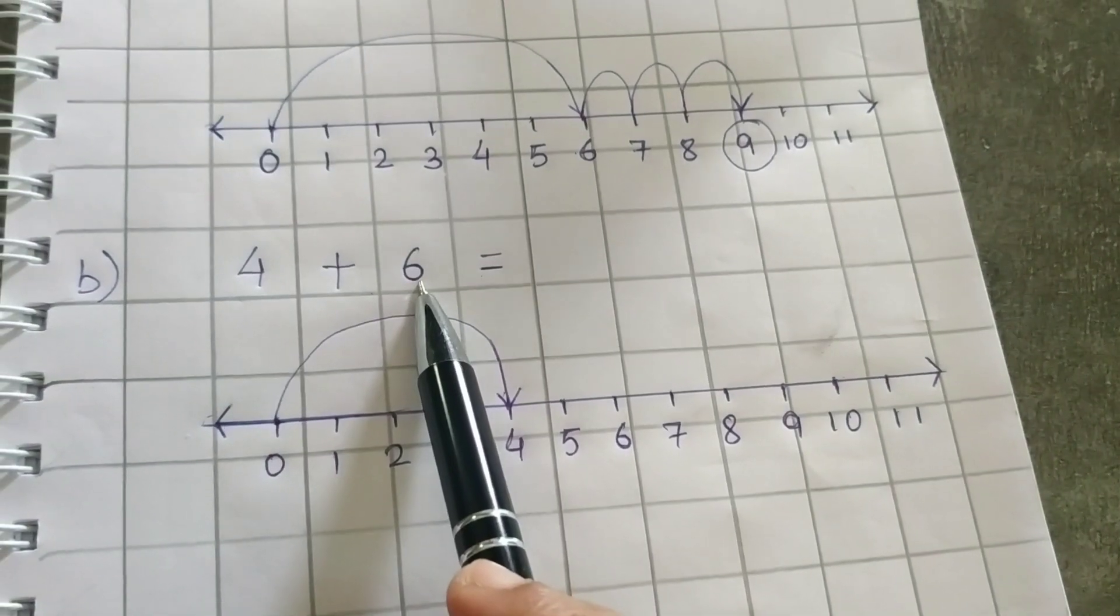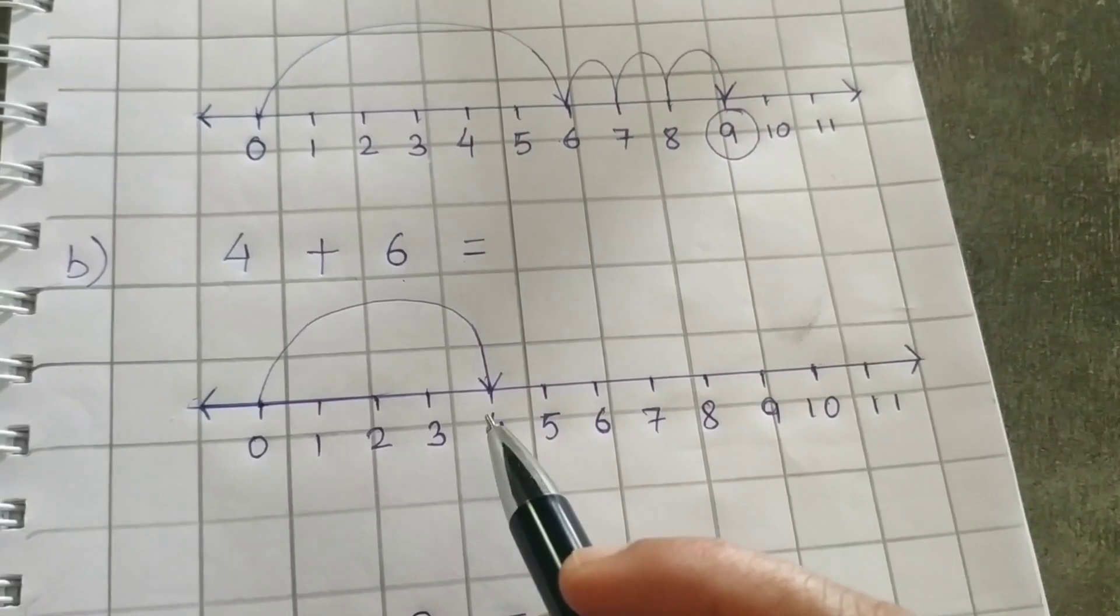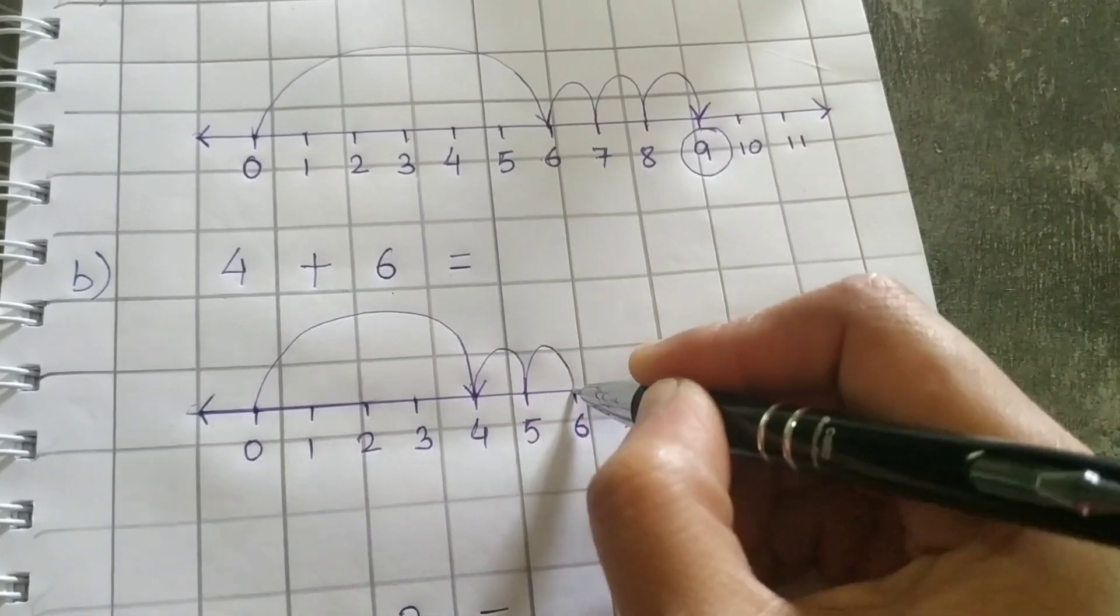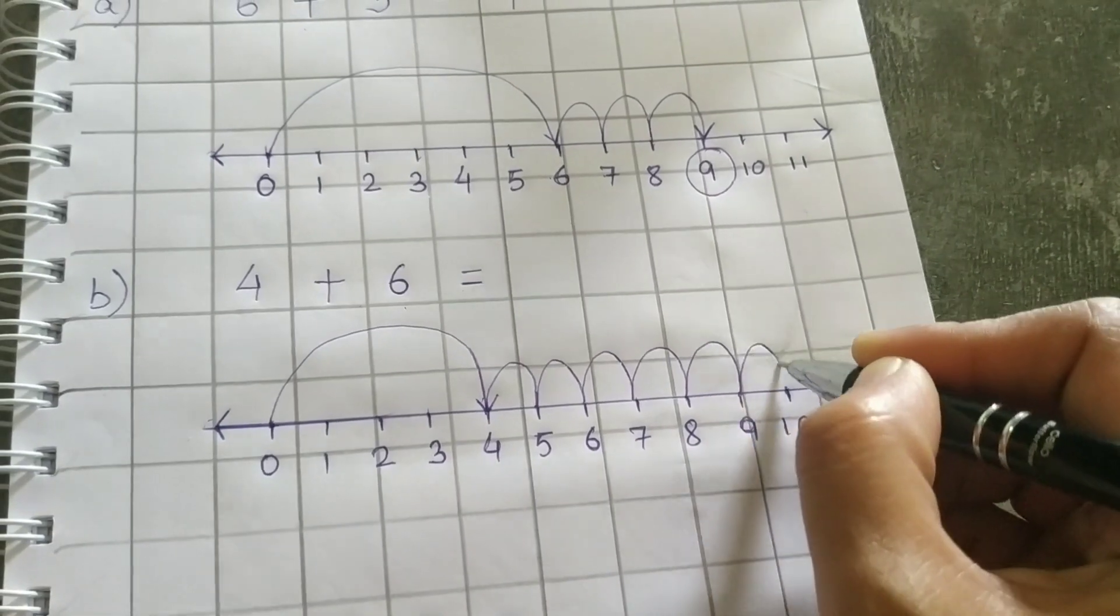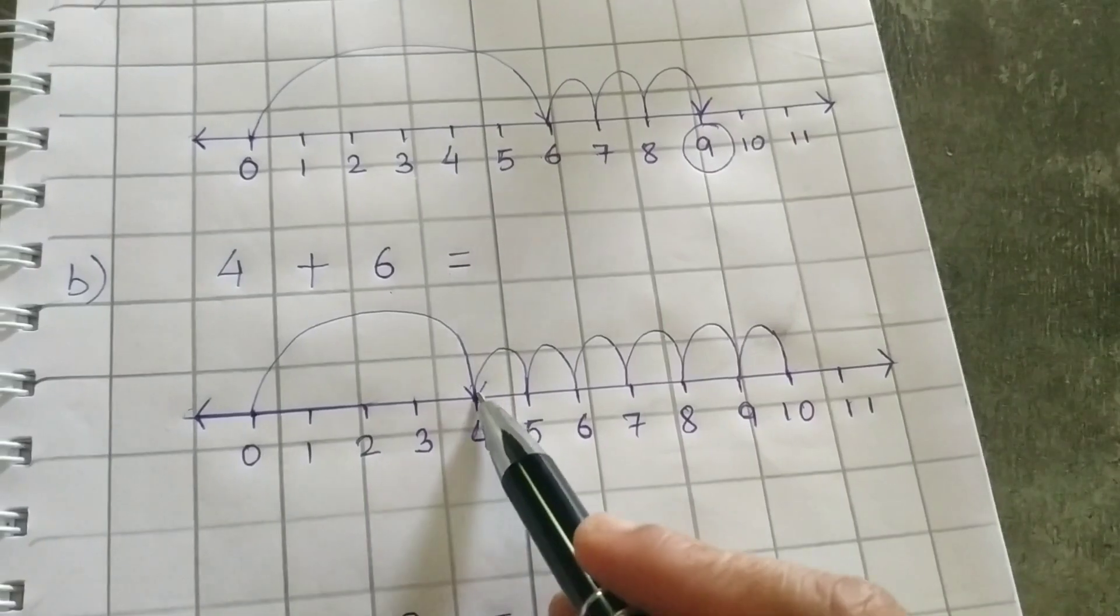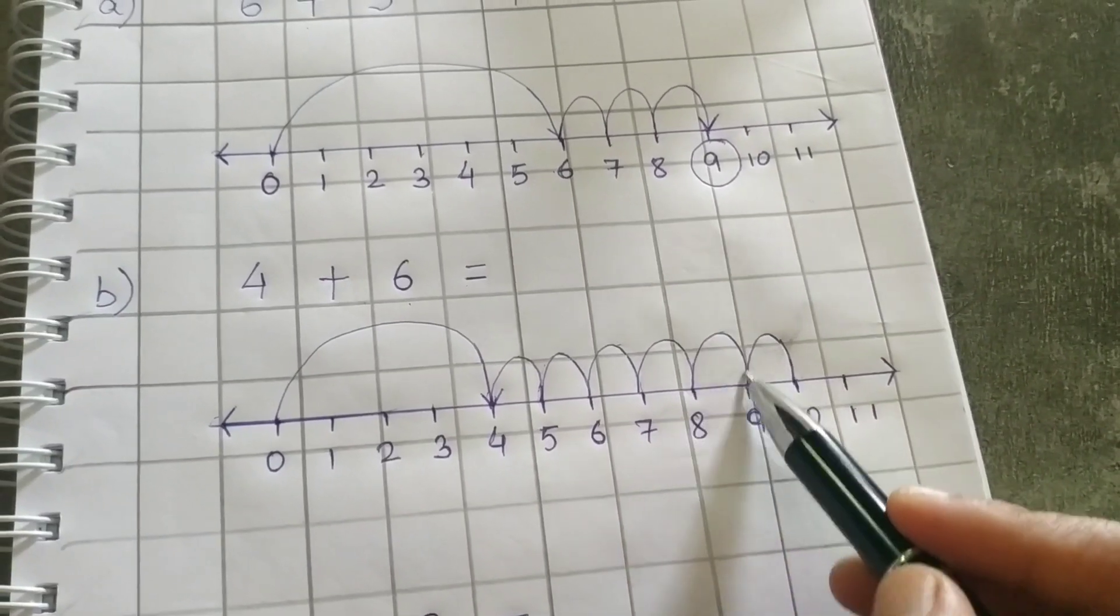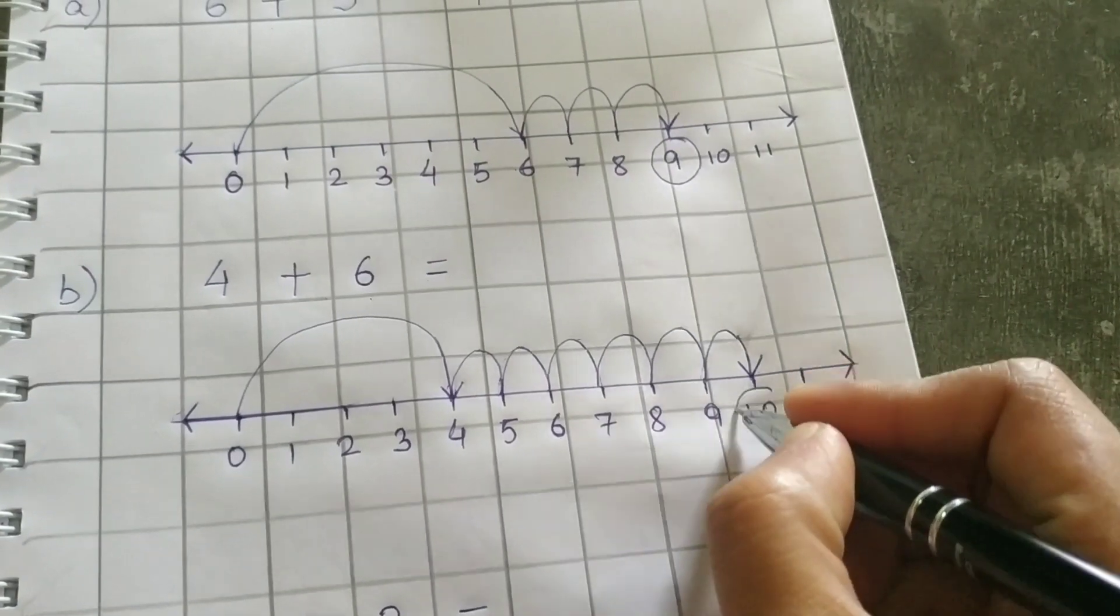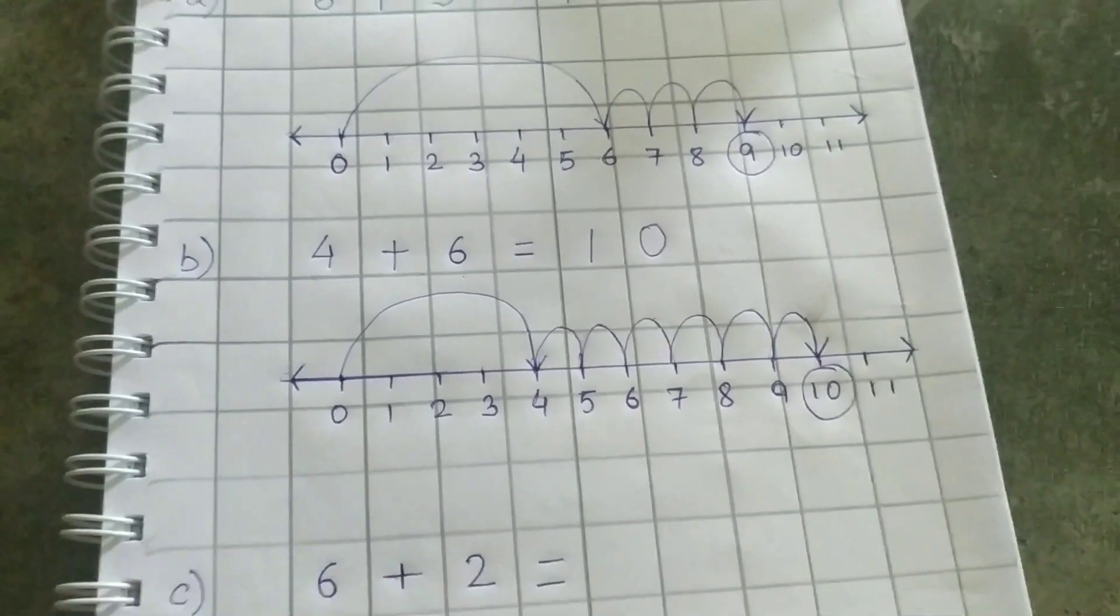Plus how much? It is 6. So how many boxes we have to jump? 6. Let's start. 1, 2, 3, 4, 5, 6. Correct. So after 4, what is the number? 5, 6, 7, 8, 9, 10. So what is the answer? Yes. It is 10. Correct.